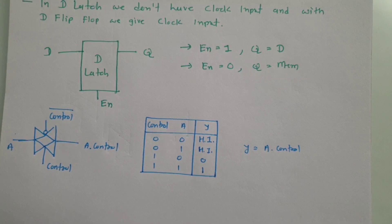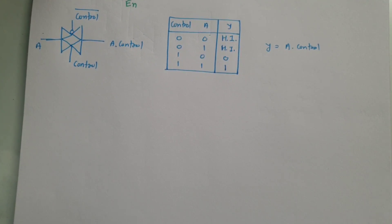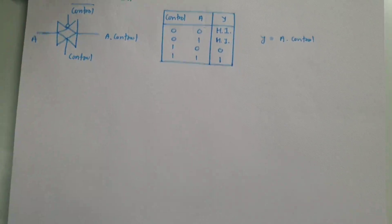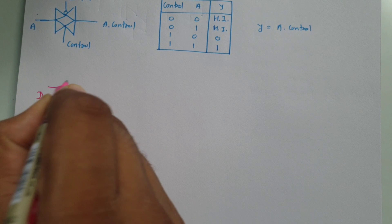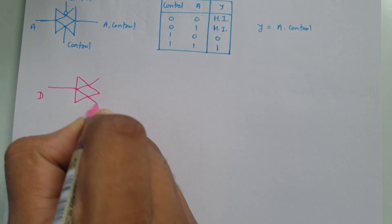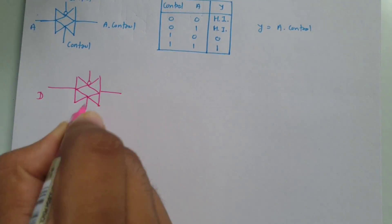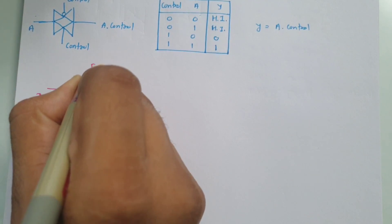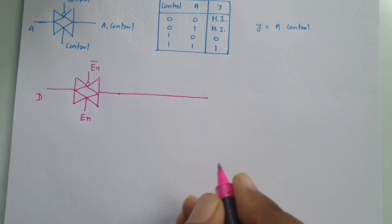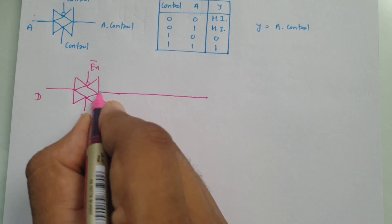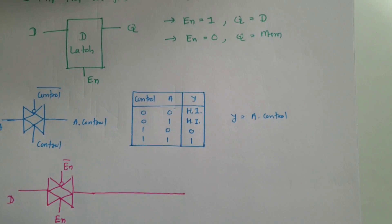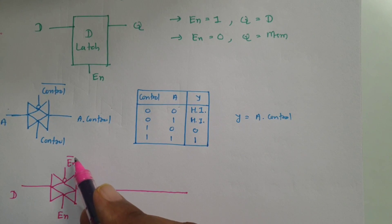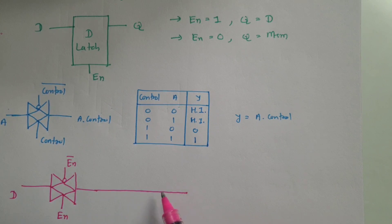Now we will use this to form a basic circuit of D latch. Here we have input D connected with a transmission gate, where control and control bar signal is there. I'll be providing enable over here, and here it should be enable bar. When enable is equals to 1, enable bar will be zero, so D will come at output. We can say Q equals D when enable is equals to 1.